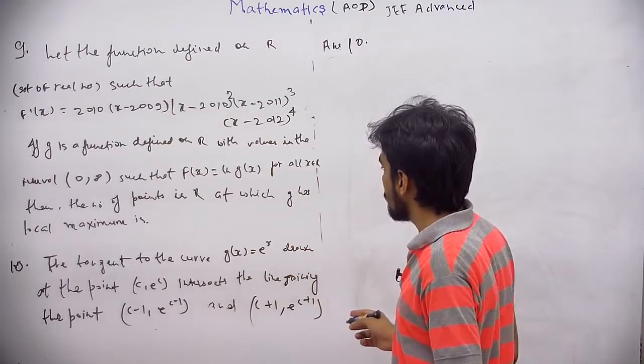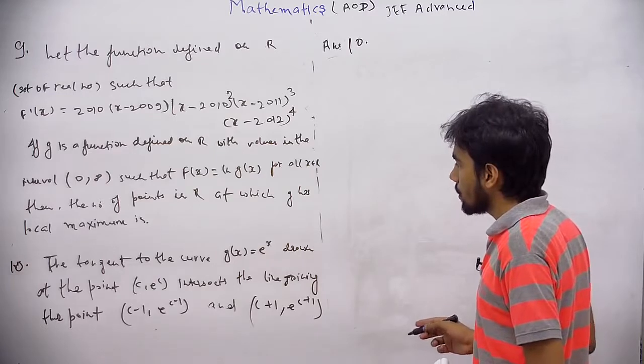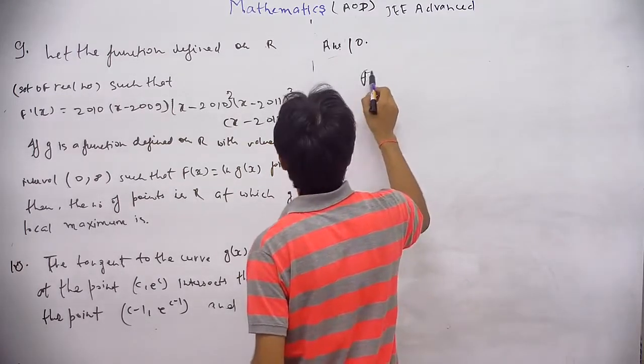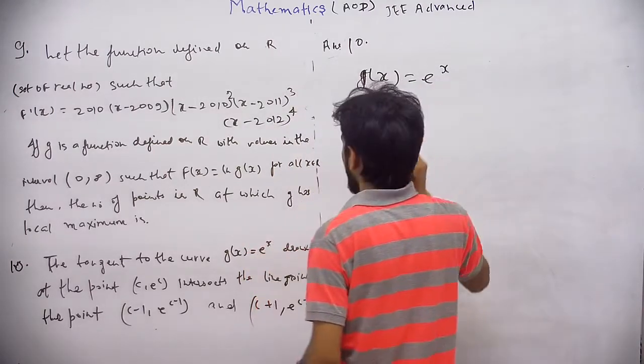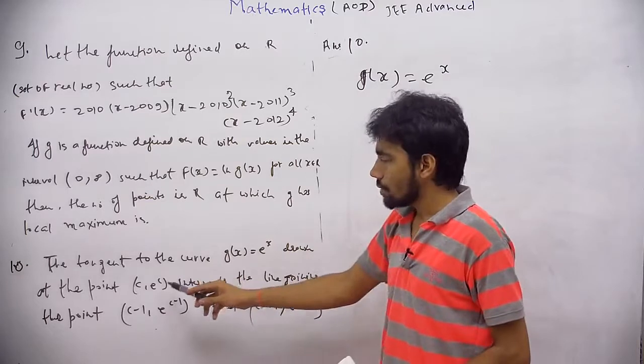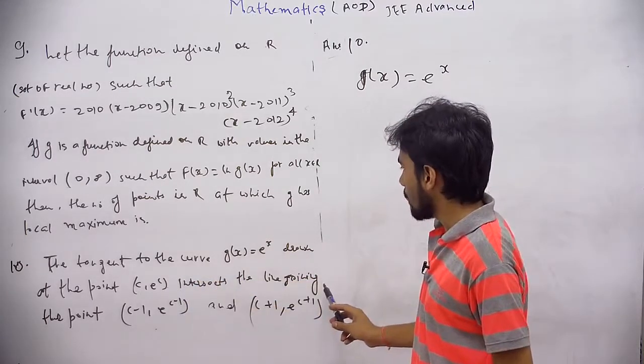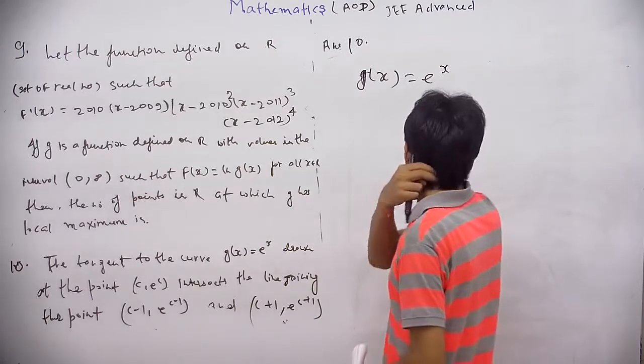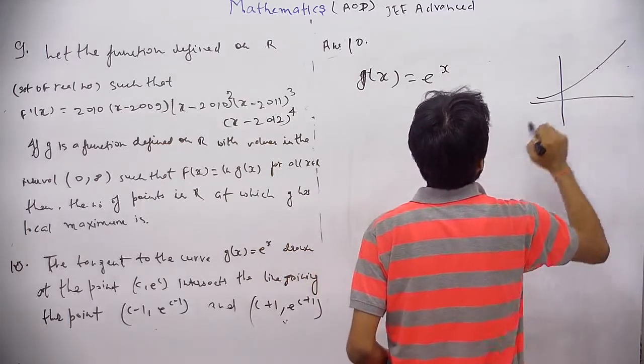The tangent to the curve g(x) is equal to e to the power x drawn at the point (c, e^c). Function is given. So the tangent at the point e^c intersects the line joining the point (c-1) and this. Okay. So we all know the function of g(x). It will be like that. Now take c any arbitrary point like this.